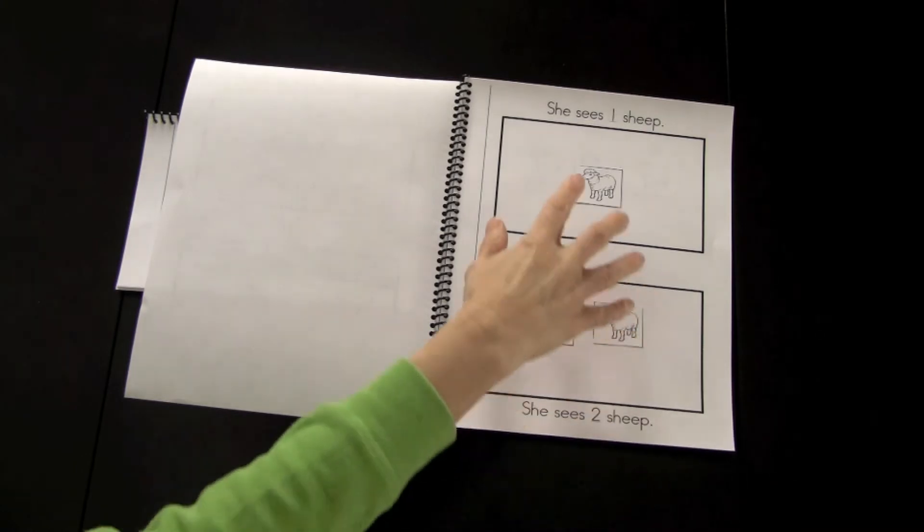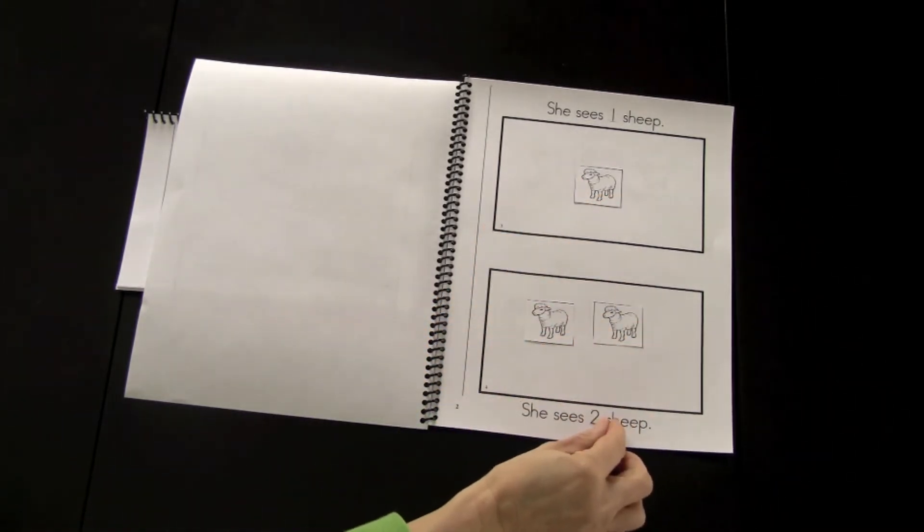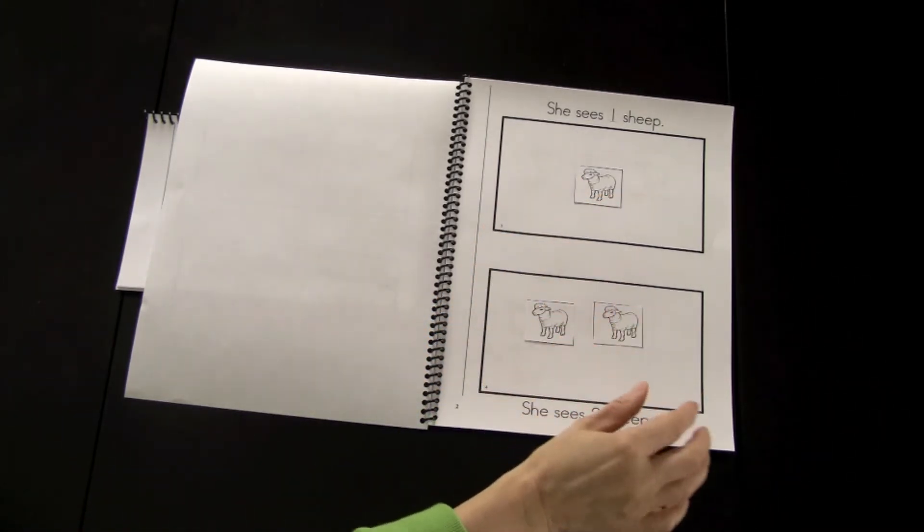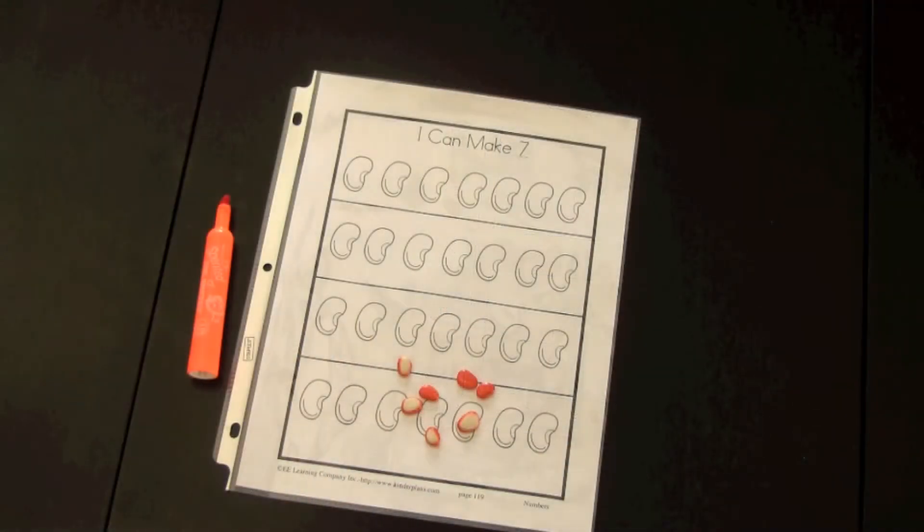Then she sees two sheep. And as you're going through the book, you can show how each time one more has been added. The Little Bo Peep Number Book introduces the concept of addition and focuses on number seven. So the children can now play spill the beans and make addition sentences related to the number seven.